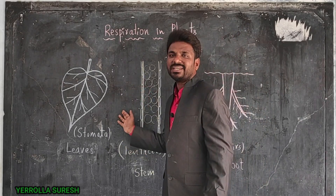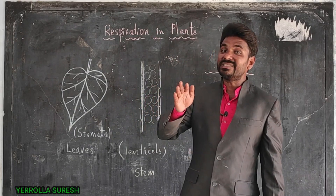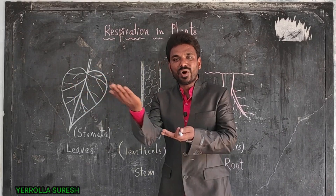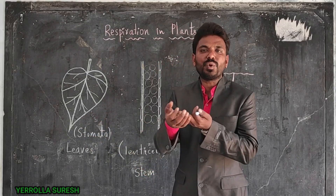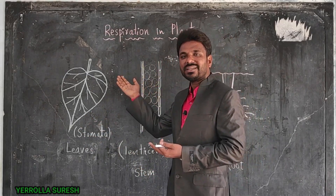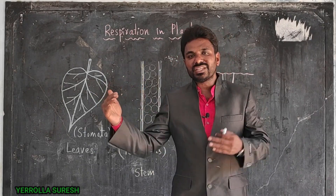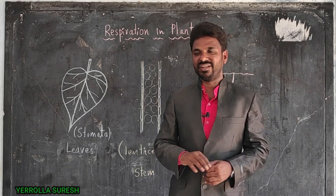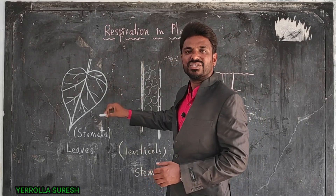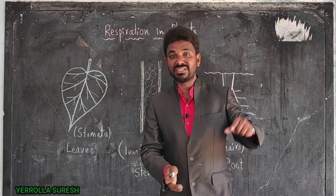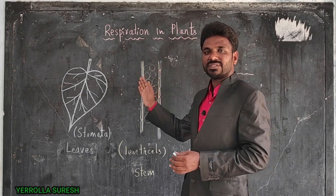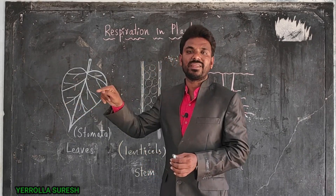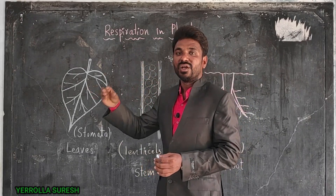How does oxygen enter into the leaf? On the lower side of the leaf, many small minute holes are present. The small holes on the lower side of the leaf are called stomata, and through the stomata, exchange of gases occurs. This exchange happens by the process of diffusion. The concentration of oxygen is higher in the atmosphere than inside the leaf, so oxygen moves from the higher-concentrated area in the atmosphere into the lower-concentrated area inside the leaf through the stomata.